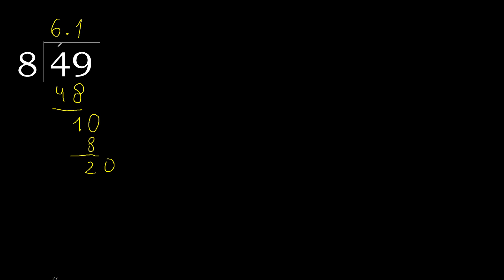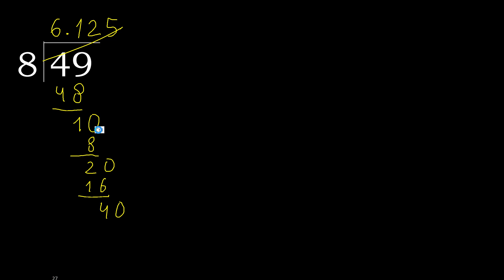Complete point. Bring down 20. 8 multiplied by 3 is greater. 8 multiplied by 2 is 16. Subtract to get remainder 4. Complete — bring down 40. 8 multiplied by 5 is 40, which is not greater. Subtract 0.